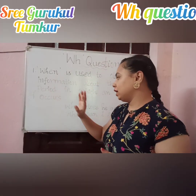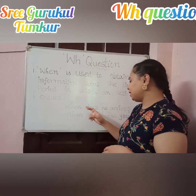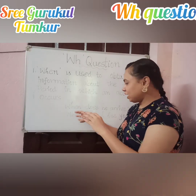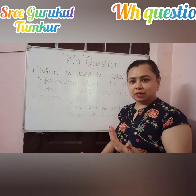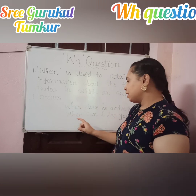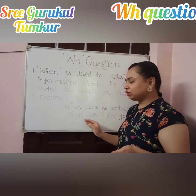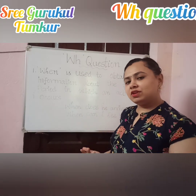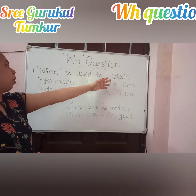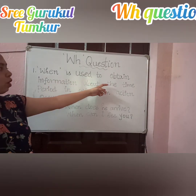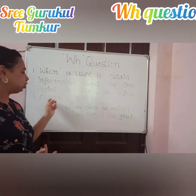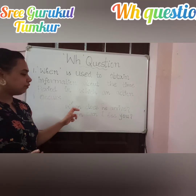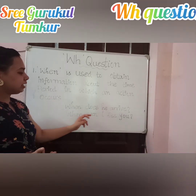The next question tag is 'when'. To know the time period — to know the information about when an action has occurred — we use 'when'. Examples: 'When does he arrive?' — it denotes the time, like today or tomorrow. 'When can I see you?' — for this also we say the time, like 'Today evening I will see you.' So 'when' is used to obtain information about the time period in which an action occurs.